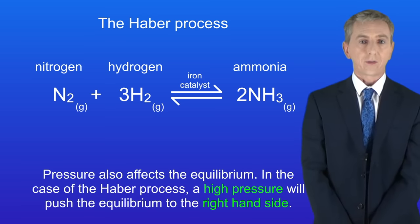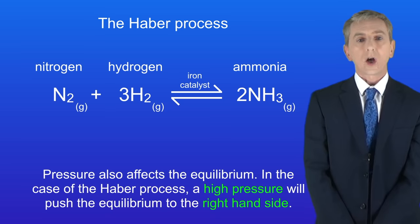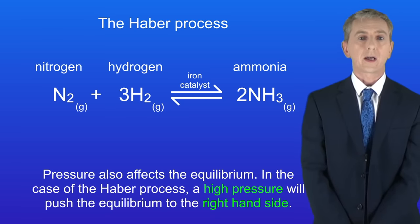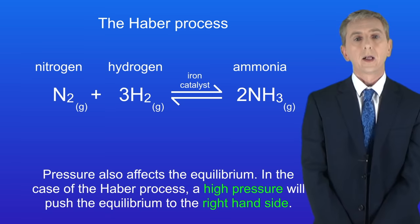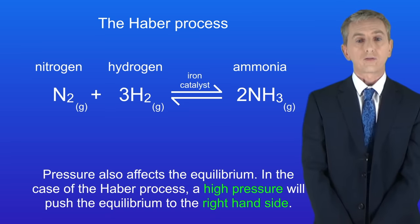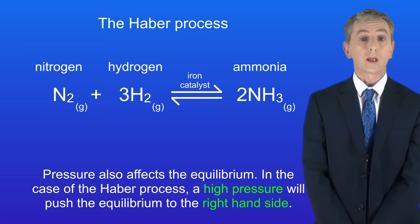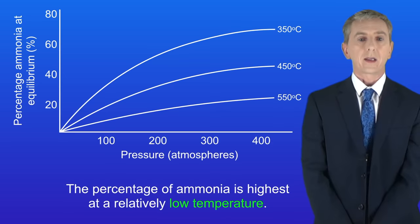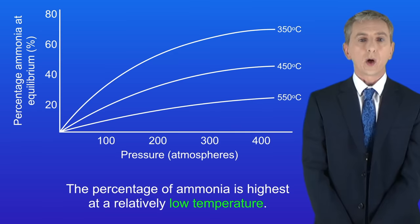Pressure also affects the equilibrium. In the case of the Haber process, a high pressure will push the equilibrium to the right-hand side — we've already looked at the effect of pressure on reversible reactions in the rates of reaction topic. In the exam you could be asked to interpret graphs of reaction conditions versus yield of ammonia; a graph of this is shown here.